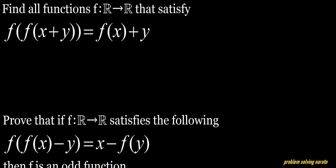If we set y equals zero, we get a very good relationship. We get f(f(x)) = f(x). This is good because very often when solving a functional equation problem, you want to make use of this composition f of f.